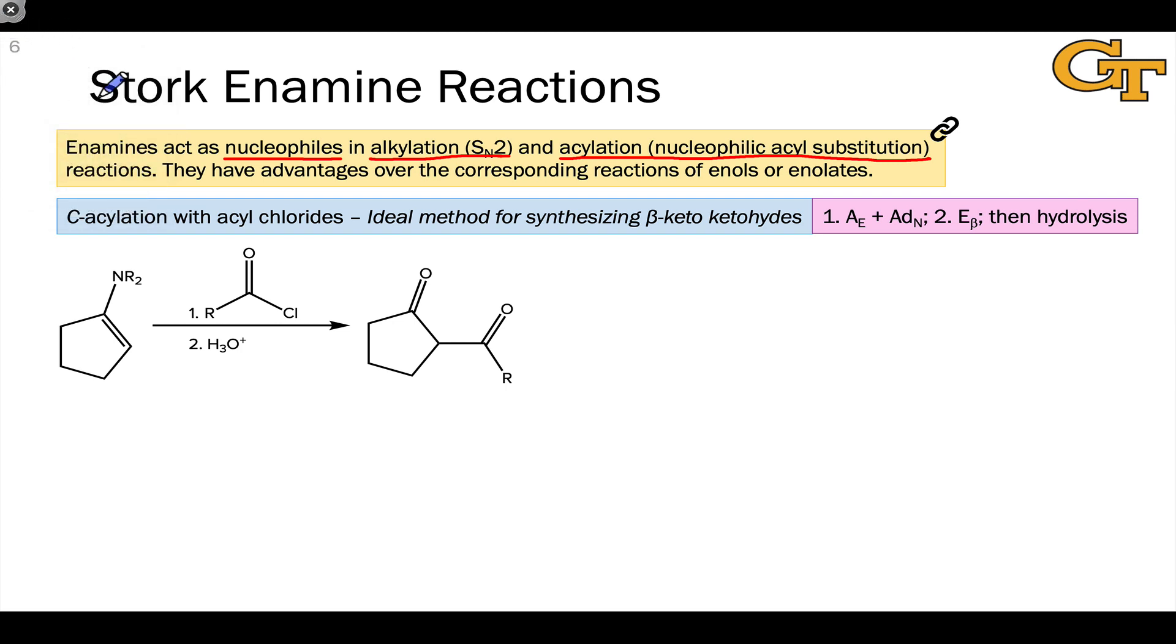The first, and one of the most common, involves the acylation of an enamine, the installation of an acyl or carbonyl group at the alpha carbon of an enamine.